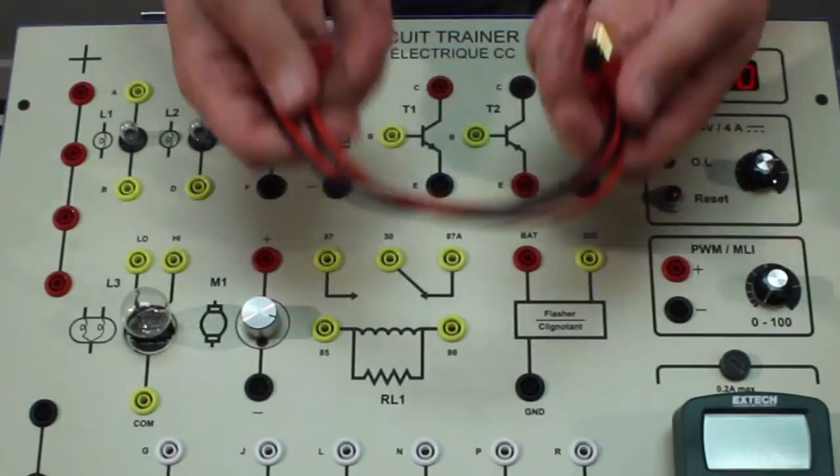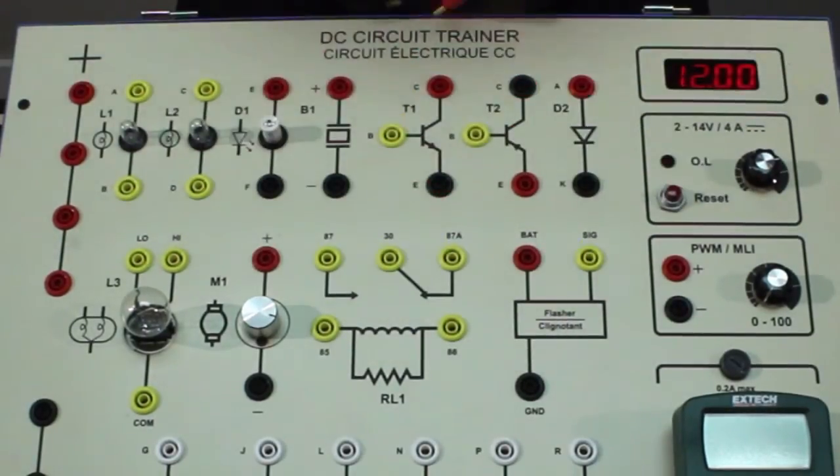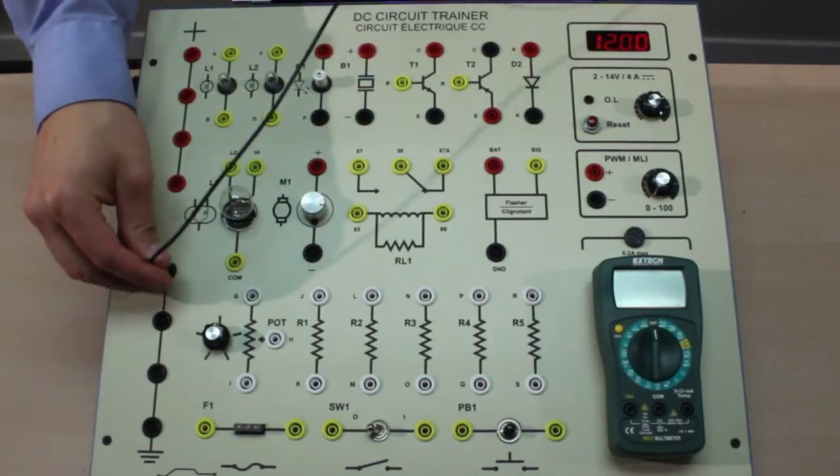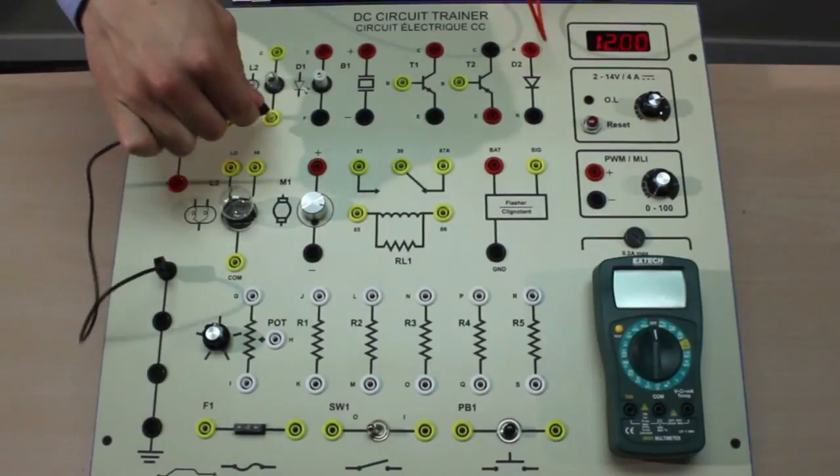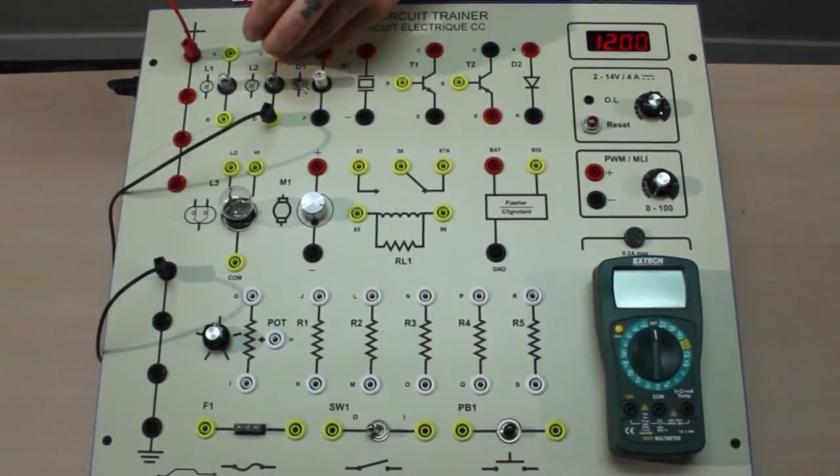All of the wiring on the trainer is done by the students using jumper leads with standard banana plugs. So if they want to wire up a light bulb for example, we're going to take ground to the light bulb and then to power. With this the light bulb will turn on.